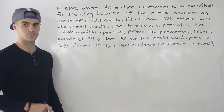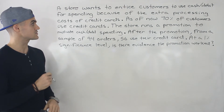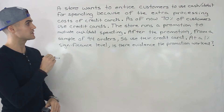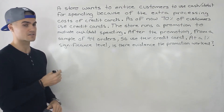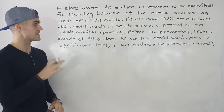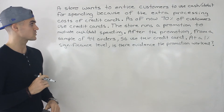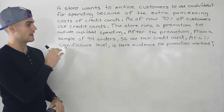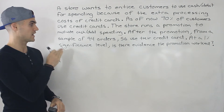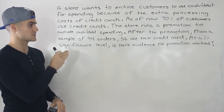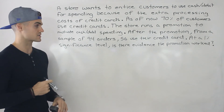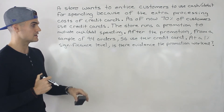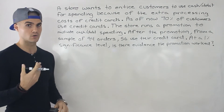So let's do an example to show how all of this works technically. A store wants to entice customers to use cash or debit for spending because of the extra processing costs of credit cards. As of now, 70% of customers use credit cards. The store runs a promotion to motivate cash/debit spending. After the promotion, from a sample of 94 orders, 56 customers use their credit card. At a 1% significance level, is there evidence the promotion worked?